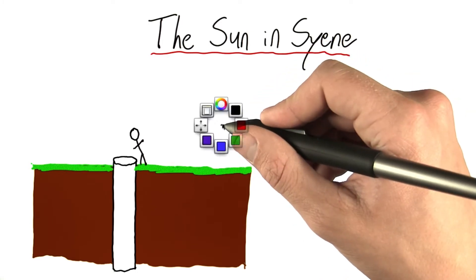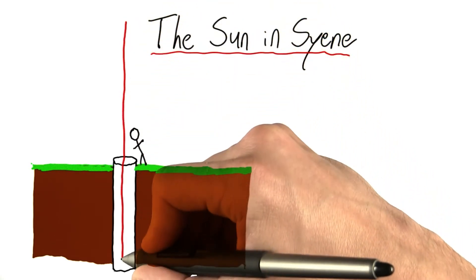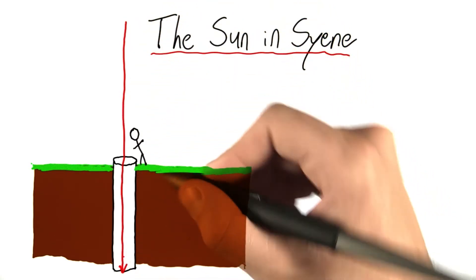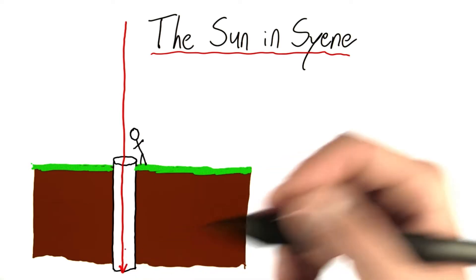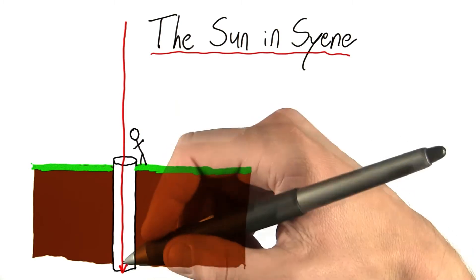Now let's see if this is necessarily the case. Sure, a ray that comes in vertically will make it all the way to the bottom of the well, no problem. But is that the only ray that will go from top of the well to the bottom? No.